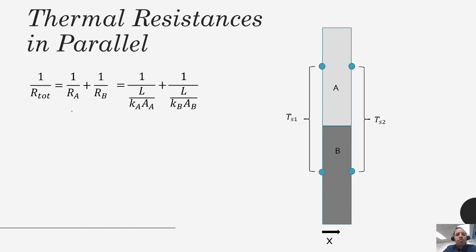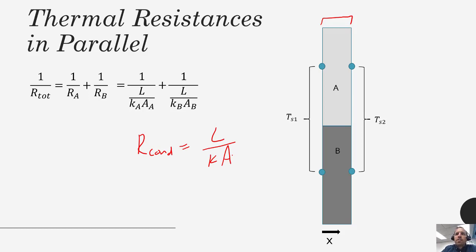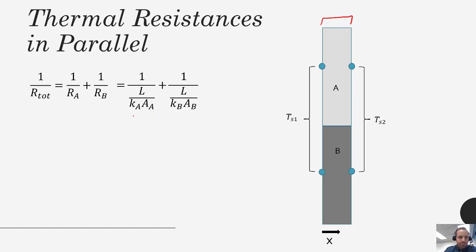When thermal resistances are in series you just add them all up. When they are in parallel, the inverse of the total thermal resistance equals the inverse of resistance through wall section A plus the inverse through wall section B. You add each of those up and then take the inverse to get the total thermal resistance. For a conductive thermal resistance, R_conductive equals L divided by K times A, where L is the wall thickness, K is the thermal conductivity, and A is the surface area normal to heat flow.